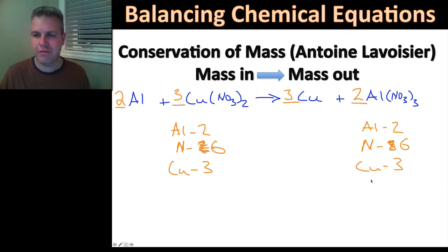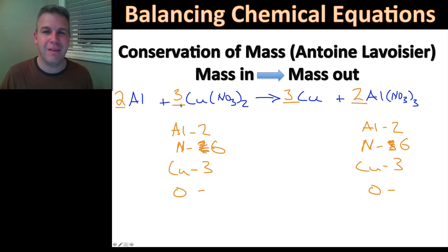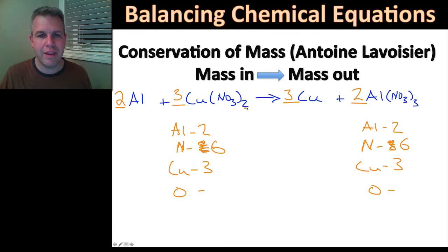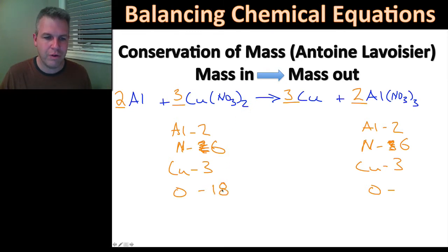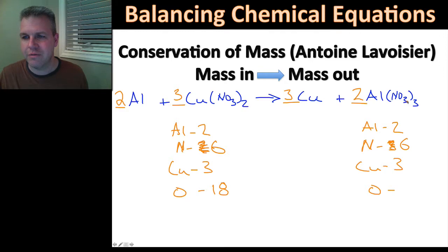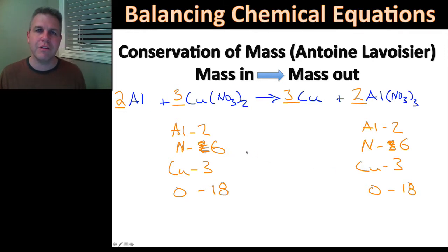Aluminum I have two — confirmed. Now checking oxygens: on the Cu(NO₃)₂ side I have three times three equals nine, multiplied by the coefficient two gives eighteen oxygens. On the Al(NO₃)₃ side I have two times three equals six, multiplied by the coefficient three gives eighteen oxygens. Both sides have eighteen oxygens — balanced.